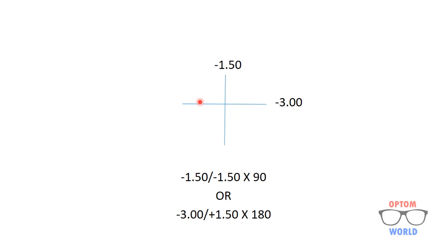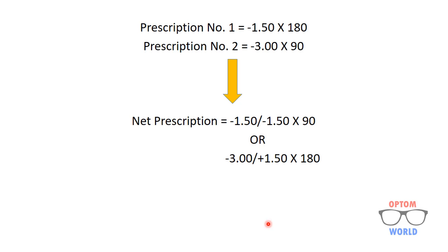From the net optical cross: if we consider minus one point five zero as the sphere, the difference between one point five zero and three is one point five, so the cylinder is minus one point five zero (moving towards more negative side) at axis 90. If instead we consider minus three as the sphere, the difference is one point five zero and we are moving towards less negative, so the cylinder is positive one point five zero at 180 axis. So the combined net prescription is minus one point five zero with cylinder minus one point five zero at 90, or minus three sphere with plus one point five zero cylinder at 180.